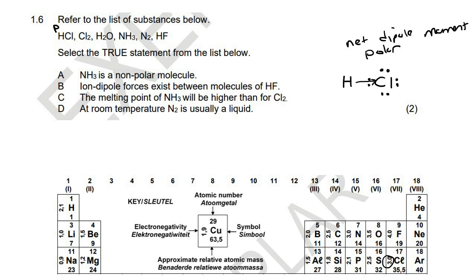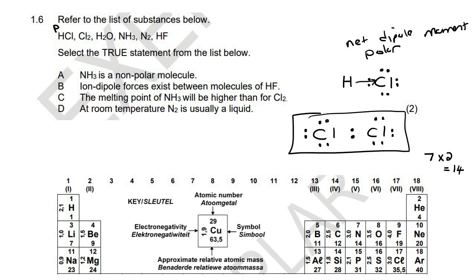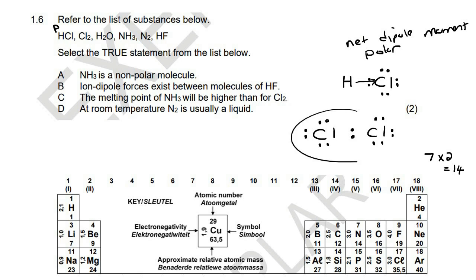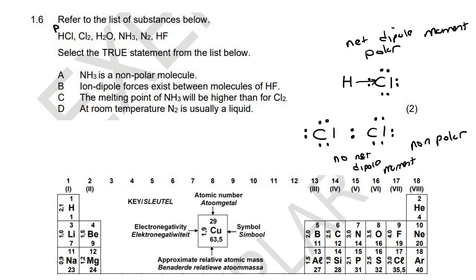Let's move on to Cl2. With Cl2, you're just going to have two Cls. Now each Cl is in group seven, so there's going to be a total of 14 valence electrons. You always put two of them in the middle, then put the remaining 12 on the outside atoms. Now because these two atoms are exactly the same, the electrons are not going to go more one way or the other, so there is no arrow, and this molecule has no net dipole moment. So this is a non-polar molecule.